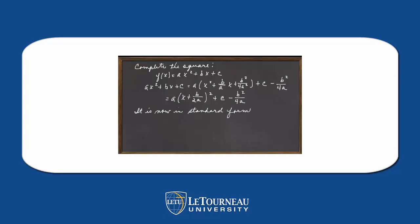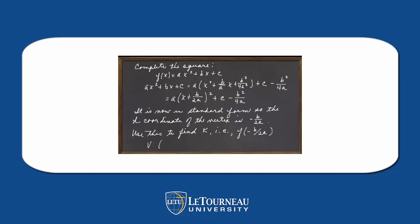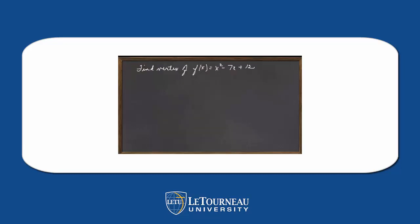It is now in standard form, so let's see what we can glean from it. The h-coordinate of the vertex of the parabola is -b/2a. We'll use this to find the k-coordinate by substituting -b/2a into the function itself. So we now have a general formula for finding the vertex without completing the square.